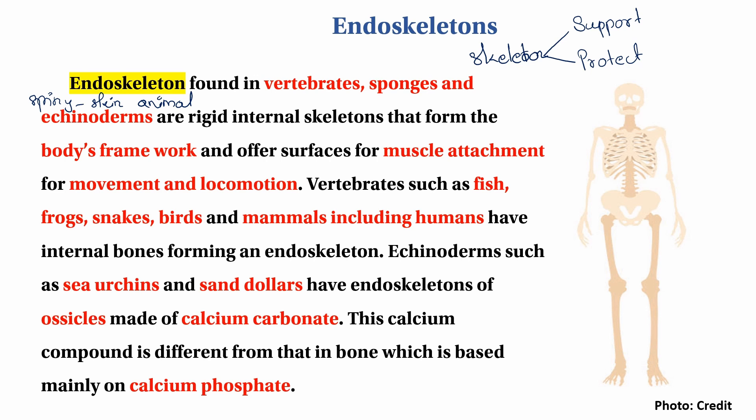In summary, there are three types of skeleton support systems: the endoskeleton, the exoskeleton, and the hydrostatic skeleton. Animals with a fluid-filled body are supported by the hydrostatic skeleton.